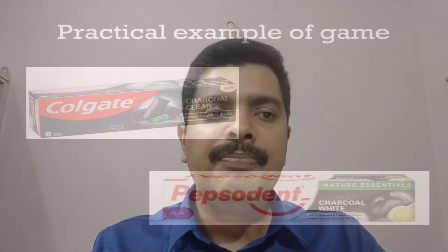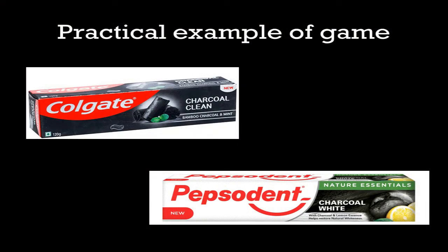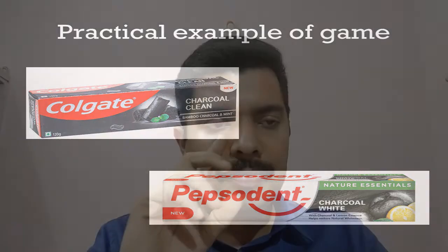Here is a practical example of a game. In the toothpaste market, there is strong competition between Colgate and Pepsodent. Both are launching a new charcoal variant and coming out with different promotional strategies. Colgate is deciding on digital marketing while Pepsodent is considering celebrity endorsement. Since both target the same market segment, their individual strategies will determine how much of the market each captures. This is a real-world example of game theory.